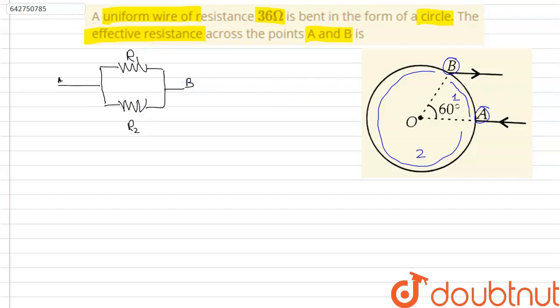To calculate the resistance R1, we first need to find out the ratio of resistance over angle. Therefore, resistance over angle for the wire is equal to 36 by 2π.